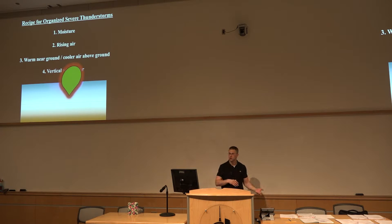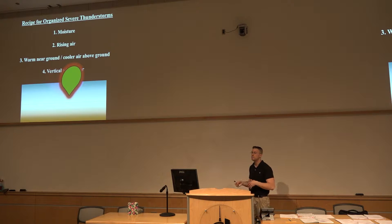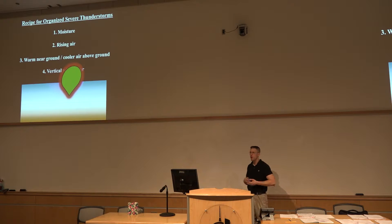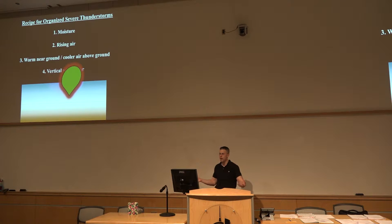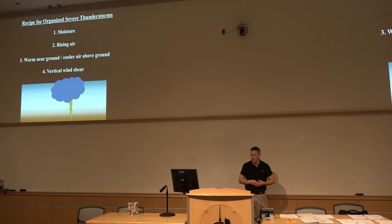Using the first law of thermodynamics and assuming minimal energy exchange with the surroundings, work is done on the environment, so the internal energy change must be negative. Temperatures cool, and eventually we reach the point where relative humidity breaches 100%, giving us saturation and the development of clouds — and perhaps eventually thunderstorms, as seen in this simple conceptual model.